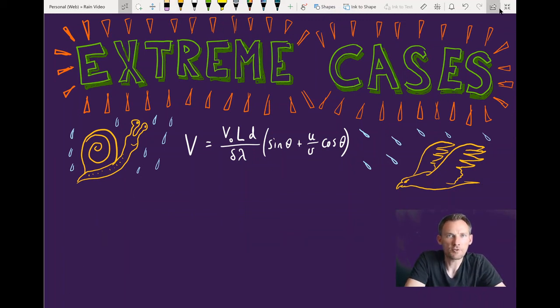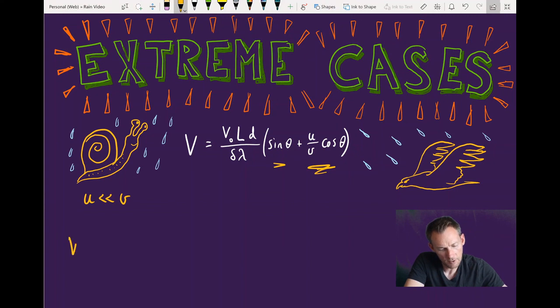The opposite extreme is if the rain is falling extremely slowly compared to your horizontal velocity. So in this case, U is very much less than V, which means now the second term is going to be very, very small, vanishingly small. So only the first term remains. So in the limit, at least, we get v naught L D over delta lambda and sine theta.